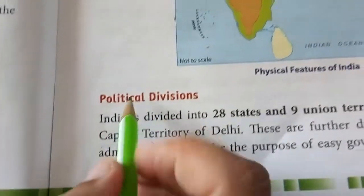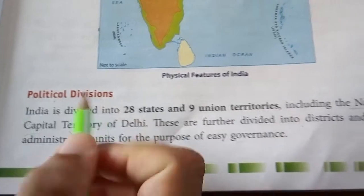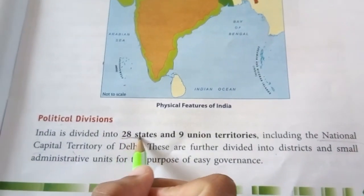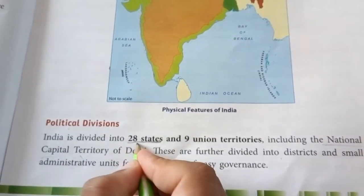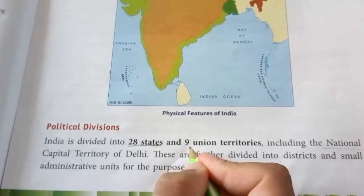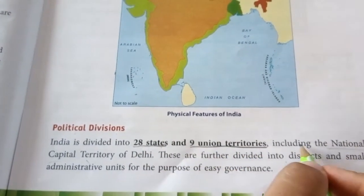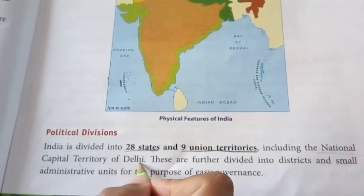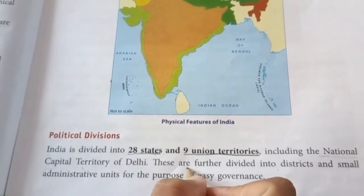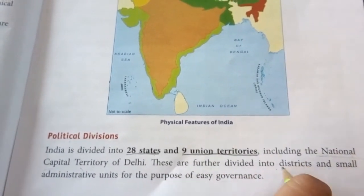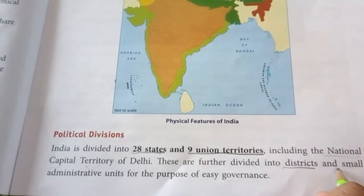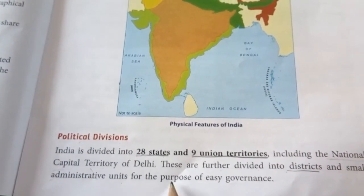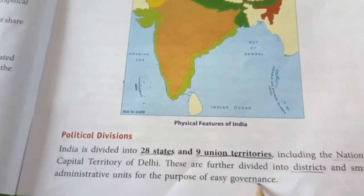Now let us learn about political divisions. India is divided into 28 states and 9 union territories, including the national capital territory of Delhi. These are further divided into districts and small administrative units for the purpose of easy governance.